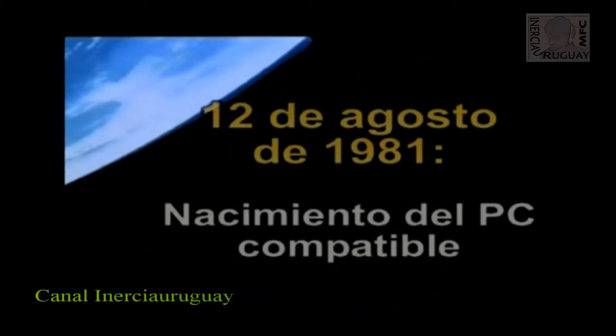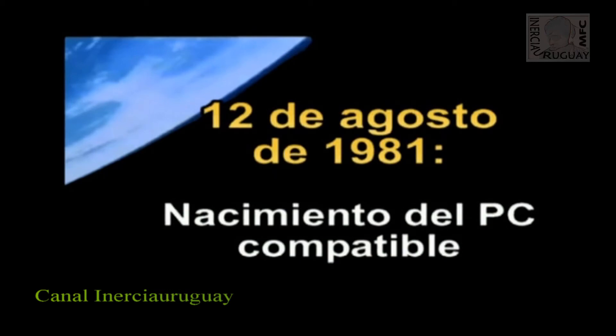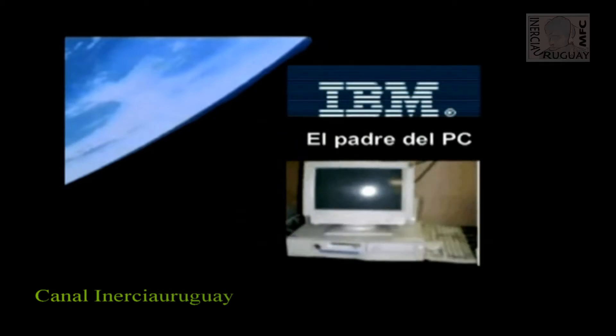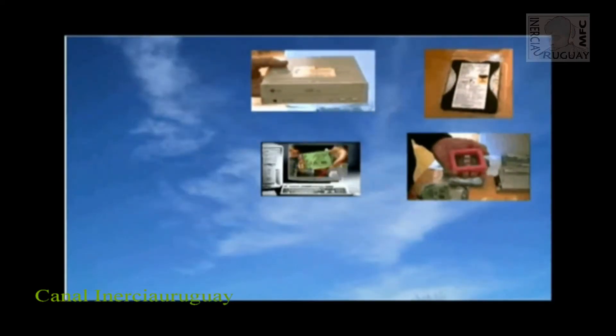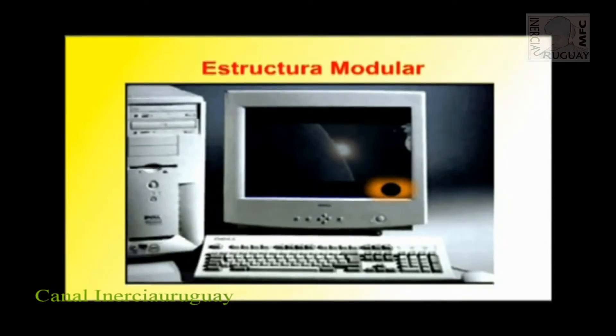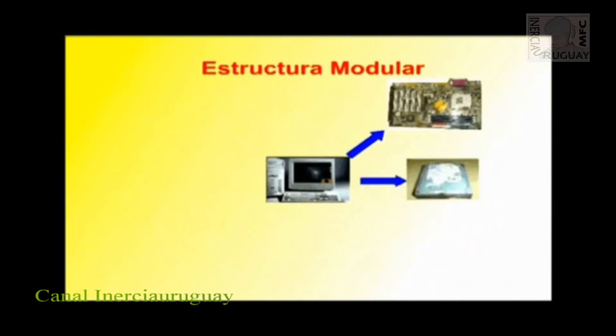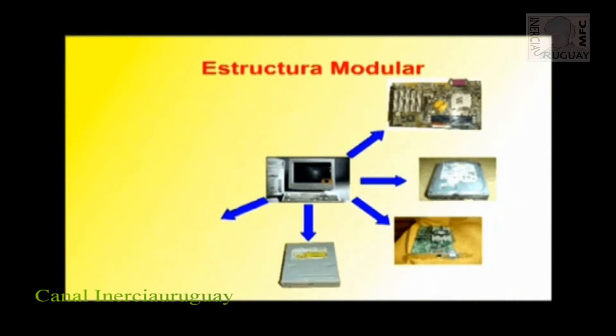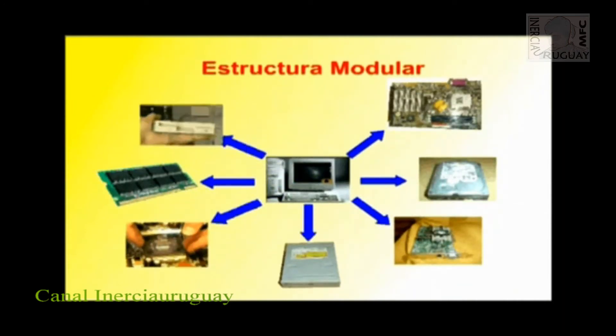El nacimiento del PC. El nacimiento del PC tuvo lugar el 12 de agosto de 1981, cuando IBM lanzó al mercado su primer PC. Este hecho fue el comienzo de la carrera vertiginosa de los tan conocidos PCs compatibles. El PC también se conoce como ordenador compatible. Pero, ¿qué es eso de compatible? Para entender bien el concepto de PC compatible es preciso saber que un PC es una máquina electrónica y también un sistema modular.